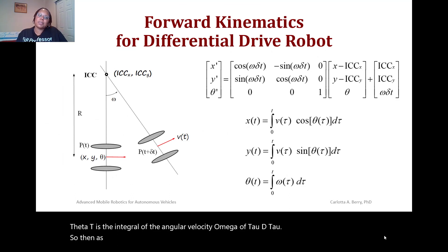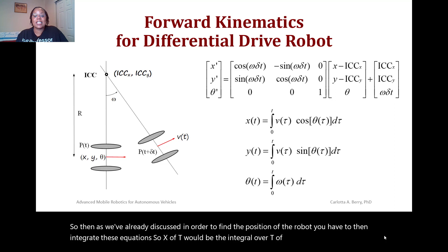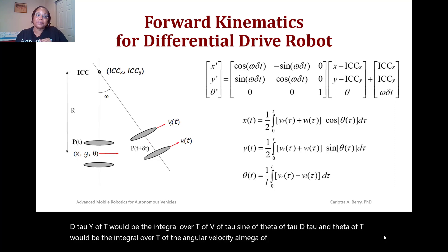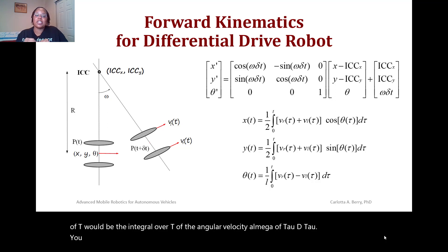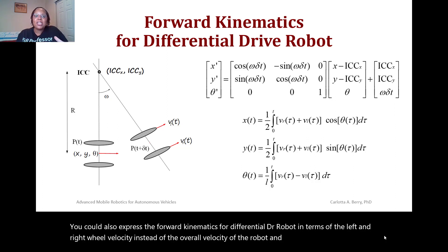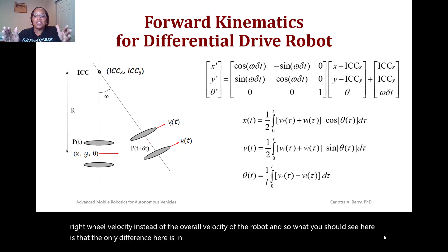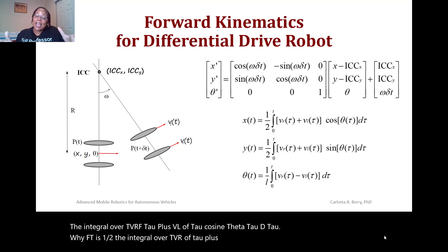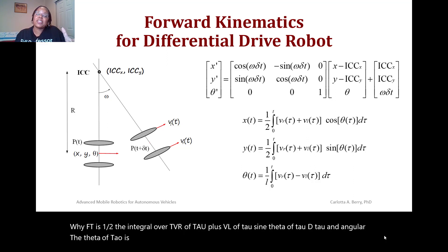To find the position of the robot you must integrate these equations. X(T) is the integral over T of V(tau)*cos(theta(tau)) d_tau. Y(T) is the integral over T of V(tau)*sin(theta(tau)) d_tau. Theta(T) is the integral over T of omega(tau) d_tau. You can also express forward kinematics in terms of left and right wheel velocities: X(T) = (1/2) integral of [VR(tau) + VL(tau)]*cos(theta(tau)) d_tau, Y(T) = (1/2) integral of [VR(tau) + VL(tau)]*sin(theta(tau)) d_tau, and theta(T) = (1/L) integral of [VR(tau) - VL(tau)] d_tau.